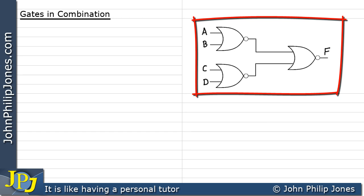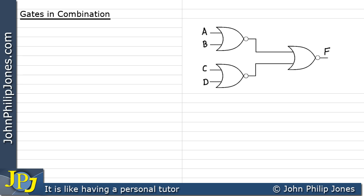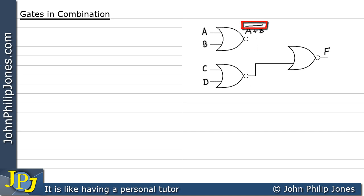Here we have another combinational logic circuit made up of three NOR gates. We'll produce the Boolean expressions at each gate. Starting with the first gate: A or B, all NOTted. Going to the other gate below, the output is C or D, all NOTted.